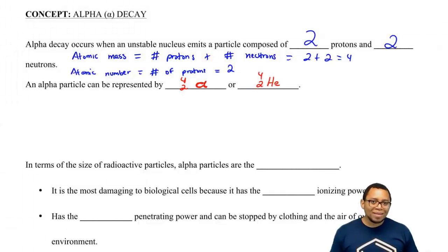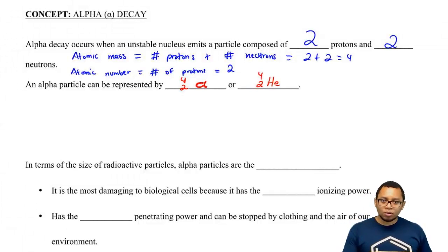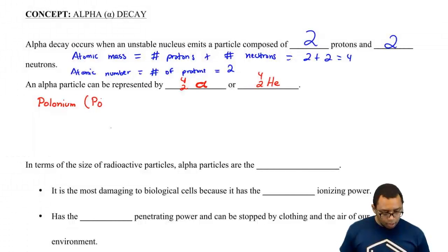Remember, we're using the term decay. Decay means that this alpha particle will be a product. So if we wanted to look at an example of this, we could think of polonium, which on your periodic table is Po.